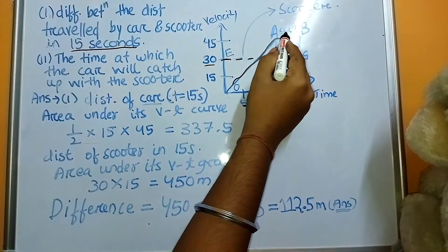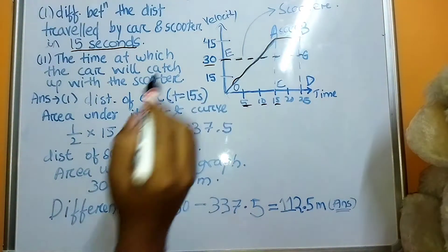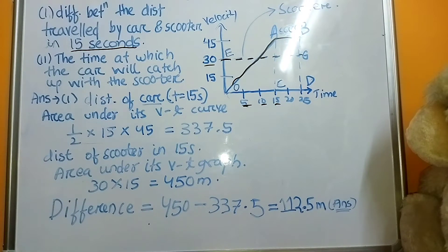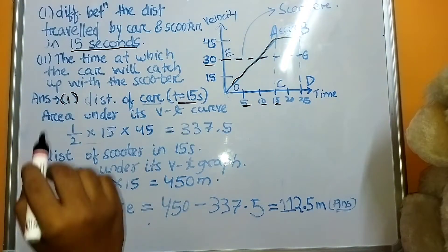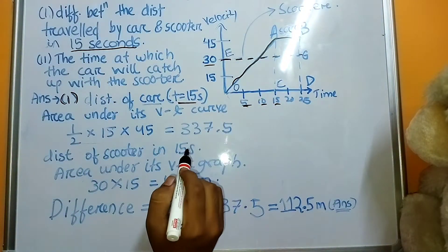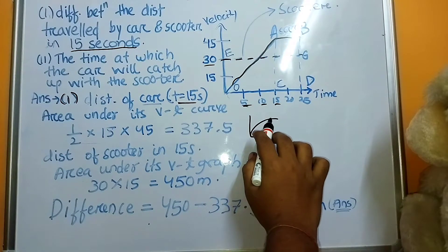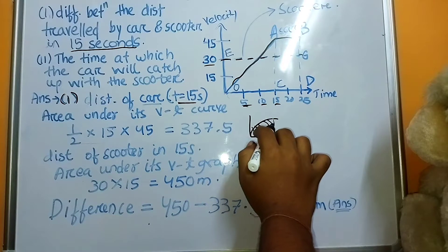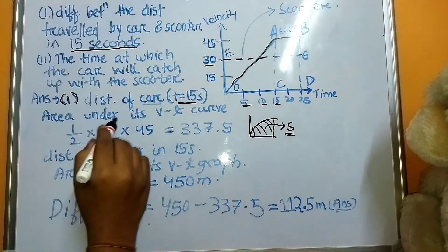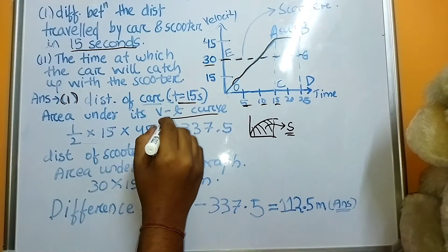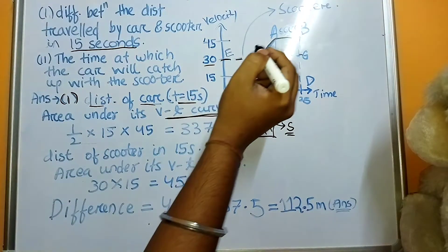First we have to find the distance that the car has travelled in 15 seconds, then the distance that the scooter has travelled in 15 seconds, and then find the difference. Distance of the car at t = 15 seconds: we know that if there is a VT graph and this is the curve, then the area under that curve gives us the displacement of the body. So the area under the VT curve will give us the distance the car has travelled.